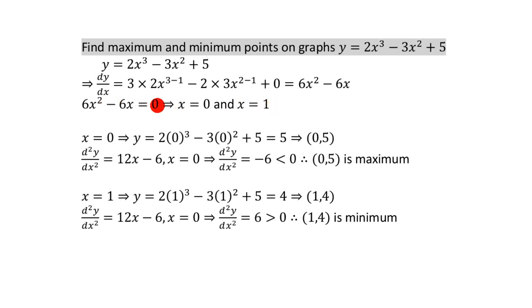Now, we've just found out where some turning points are, which is a general name for maximum and minimum points on the graph. But we don't know what kind of turning points are there. Are they maximum points or minimum points? Is this a maximum or minimum point on our graph?